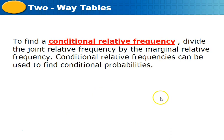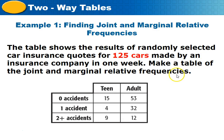To find conditional relative frequencies, divide the joint relative frequencies by the marginal relative frequencies. Conditional relative frequencies can be used to find conditional probabilities. The table shows results of randomly selected car insurance records for 125 cars, so all numbers in the table add up to 125. These records were made by an insurance company in one week.